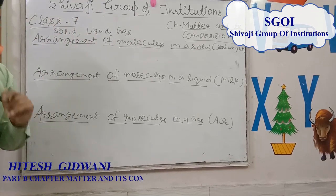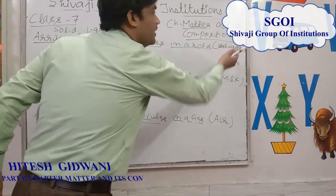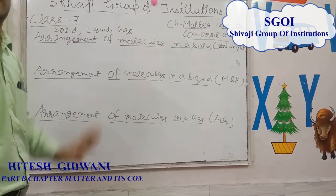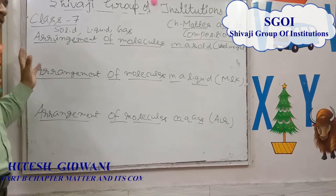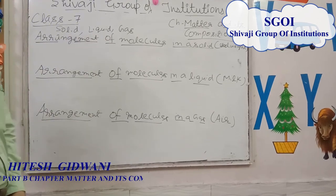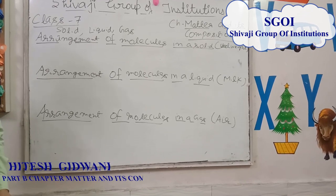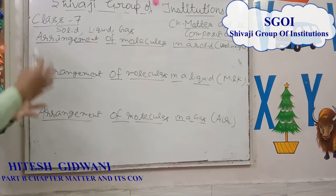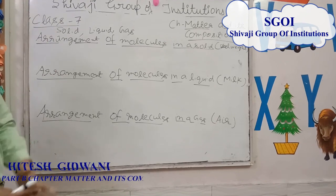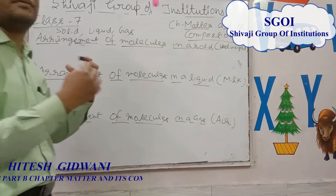Now we will discuss the arrangement of molecules in solid. We take the example of a steel weight. In solids, the molecules are very tightly packed. Because the intermolecular spaces are very less, the force of attraction between the particles is very high.